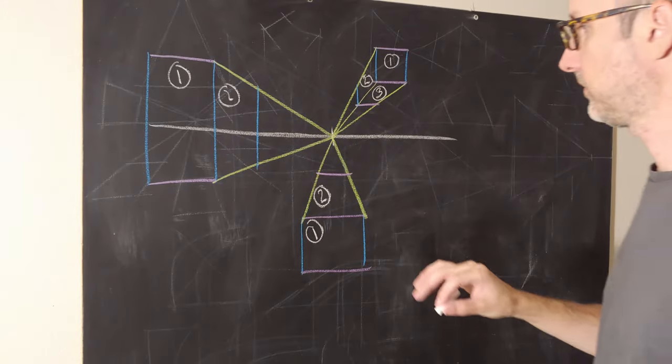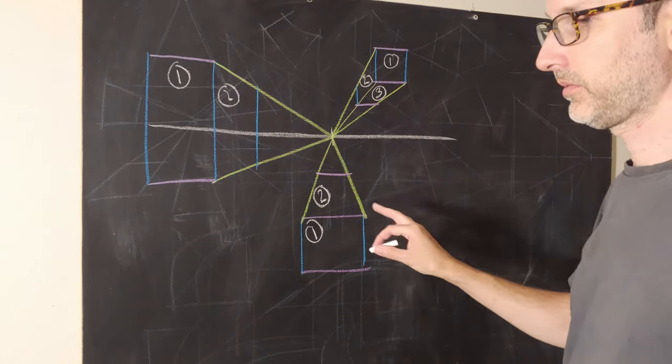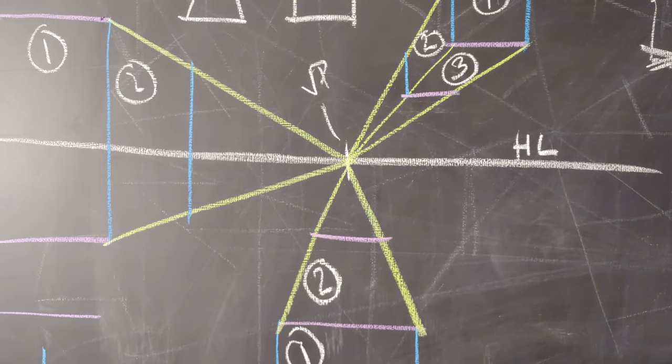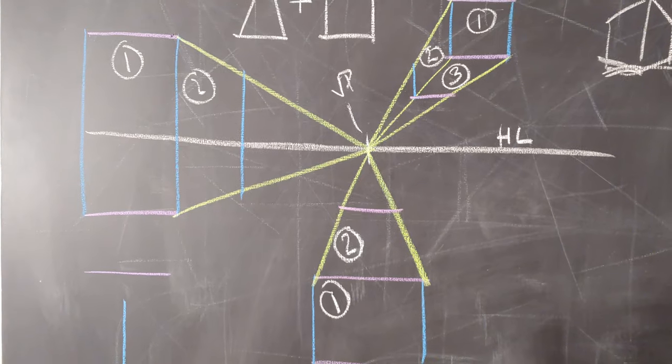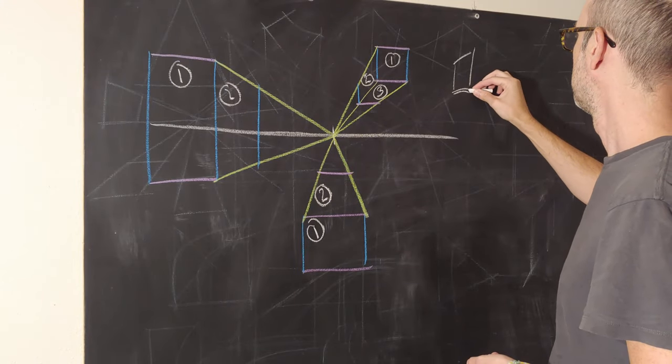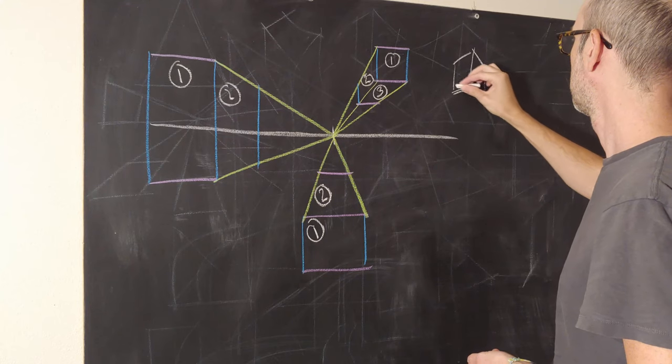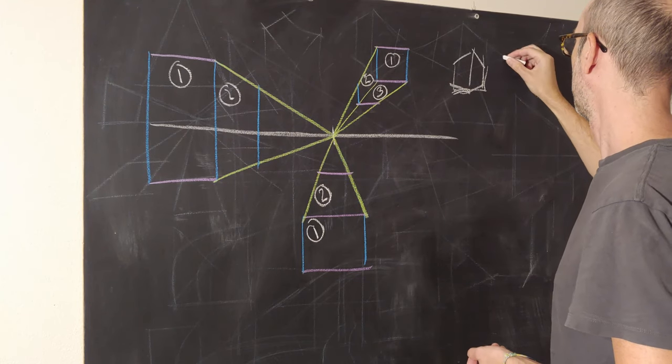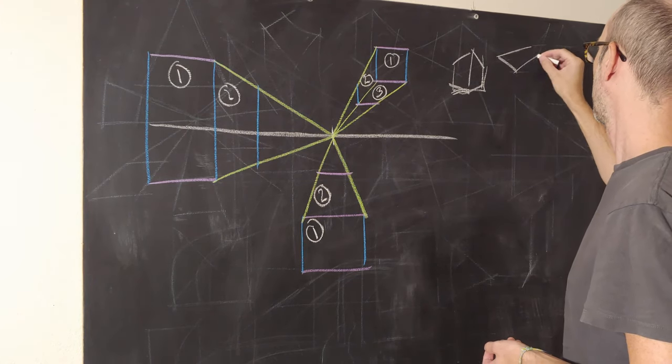So we've essentially figured out everything that we need to know about perspective at this point. Essentially, we already know how to draw boxes, right? We can already draw a two-sided box. You can already draw a three-sided box.